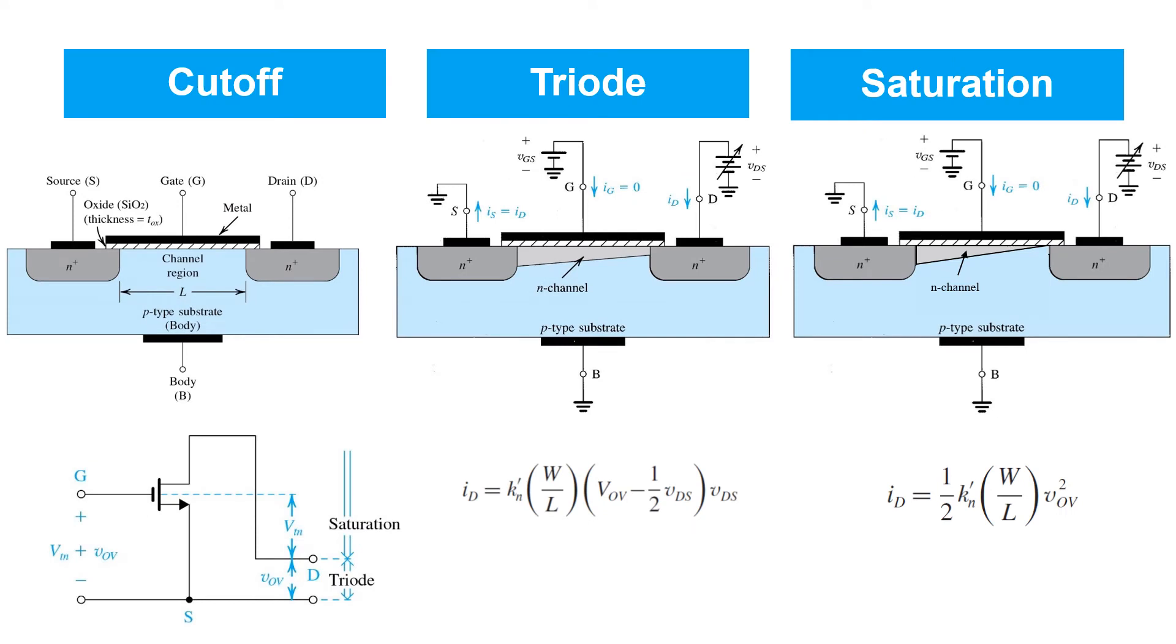So just a reminder that we've identified three regions of operation for MOSFET. When VGS is less than the threshold voltage, we're in cutoff. When VGS exceeds the threshold voltage and VDS is below the overdrive voltage, then we're in triode. And finally, with VGS exceeding the threshold voltage and VDS exceeding the overdrive voltage, then we're in saturation.